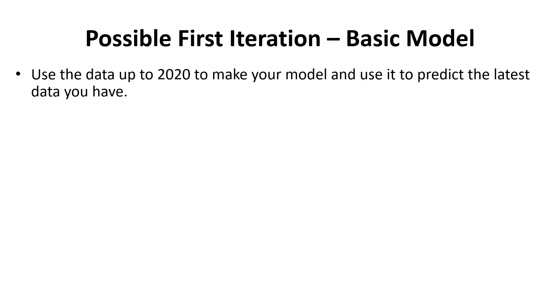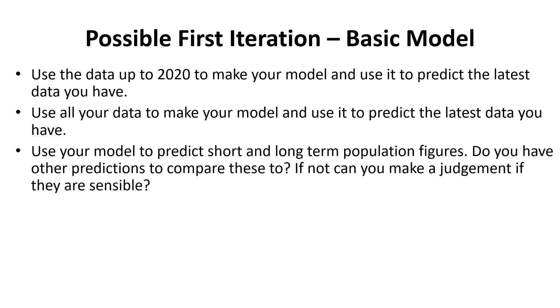What are some ways around this? For a first iteration basic model, maybe use your data up to 2020, then use it to predict the latest data you have - that might be 2024 or 2023. Maybe use all of your data to predict the latest data you have. Even though I was using that data to create a model, my model wasn't exact for my 2023 data.